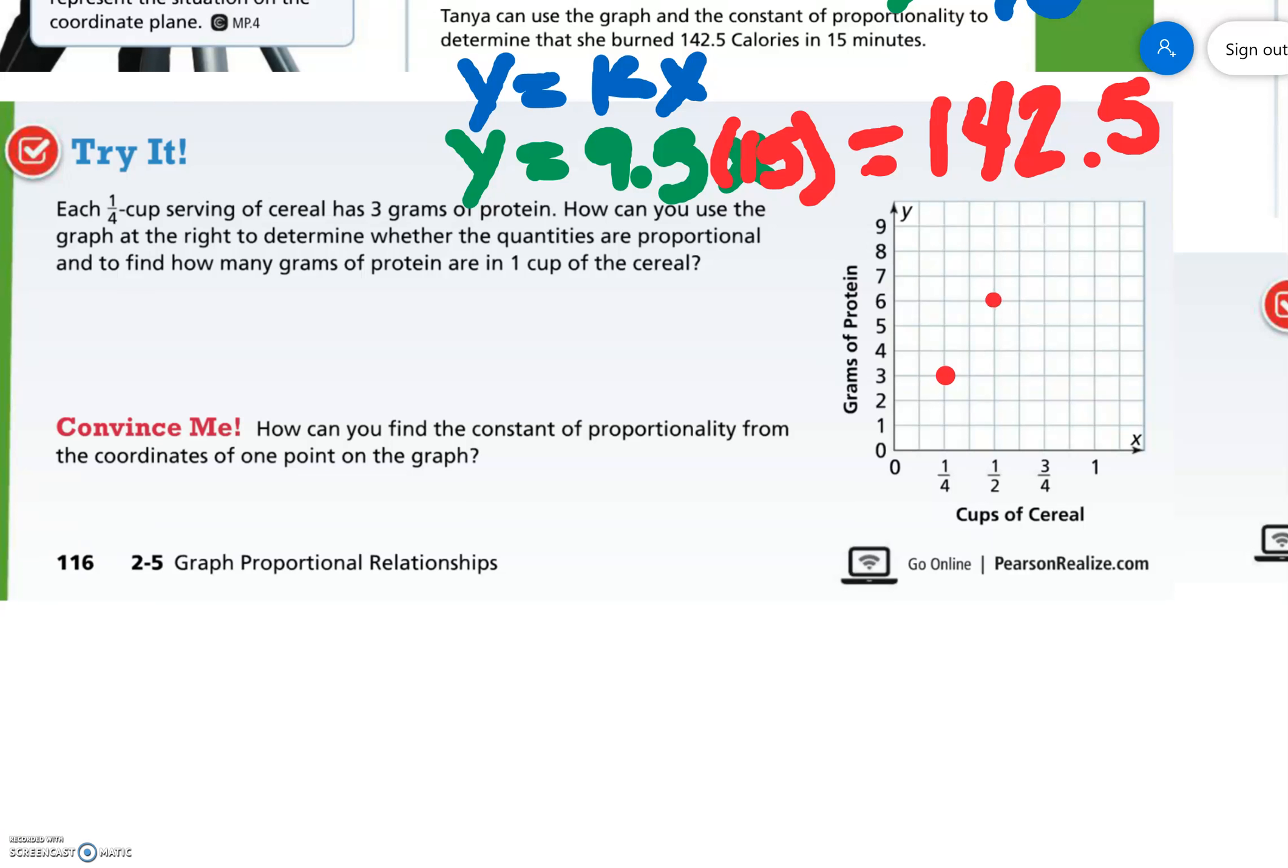One-half would be three grams more. Three-fourths is three grams more. And one would be three more grams, so that's 10, 11, 12. It would be like somewhere up here. So in one cup, there are 12 grams.